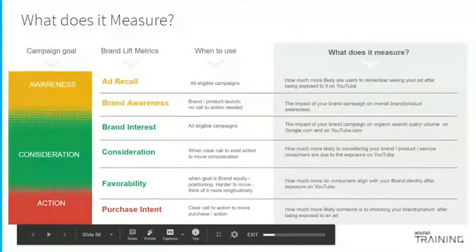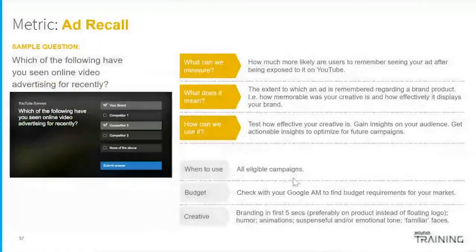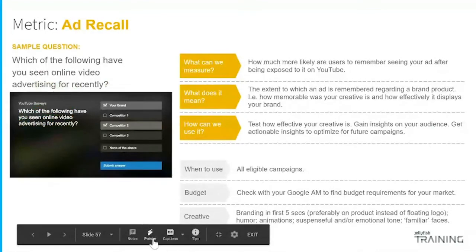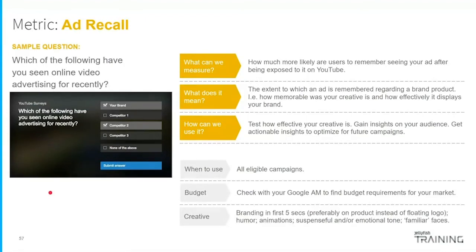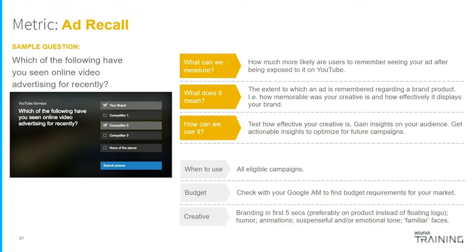These are the types of questions used in brand lift studies. You have your campaign goal: awareness in yellow — ad recall and brand awareness — in green brand interest, consideration and favorability, and finally purchase intent as the action stage. For awareness, when you have a brand or product launch and no call-to-action is needed, you want to know the impact of your brand campaign. The survey question might be: 'Which of the following have you seen an online video for advertising recently?' — to find out how effective your creative is.